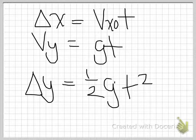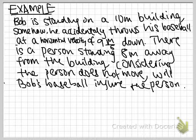So let's look at an example. Bob is standing on a 10 meter building. Somehow he accidentally throws his baseball at a horizontal velocity of 9 meters per second down. There is a person standing 8 meters away from the building. Considering the person does not move, will Bob's baseball injure the person?